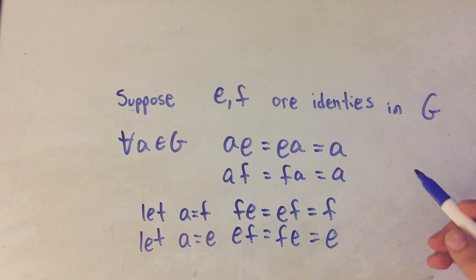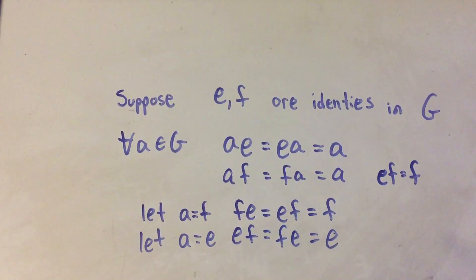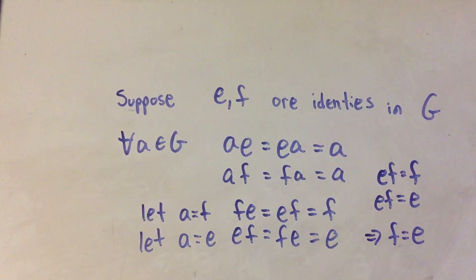All right, well look at the tail of this first equation. I have that E times F is equal to F. And look at the second equation, I have E times F is equal to E. Well, if E times F is F, and E times F is E, then that implies that F is equal to E.